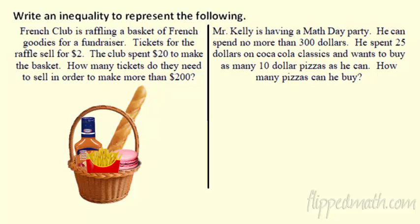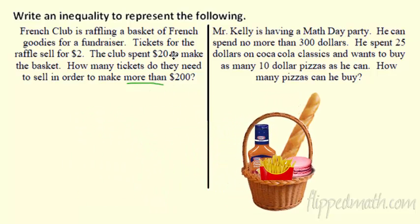Alright, let's do a couple examples. Make sure we're cool here. Let's start off with French club. French club here is raffling off this basket of French goodies. Ooh la la. That was rough. I apologize for that. They're selling tickets for $2 each. The club has spent $20 to make this basket of goodies. They want to make more than, so here is the key. They want to make more than $200. So they don't want to make $200. They need to make more than, they're going to buy some French berets or something.